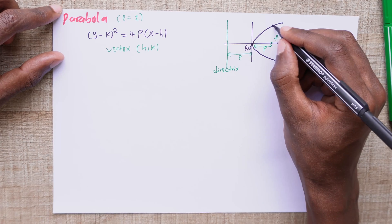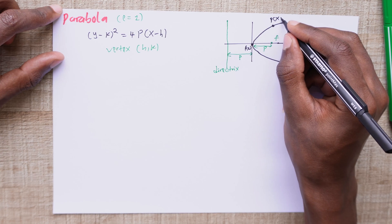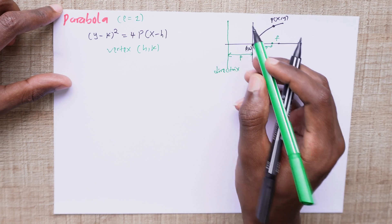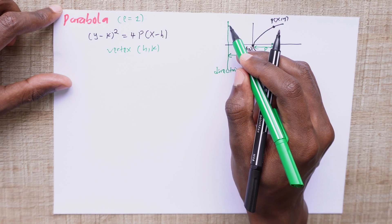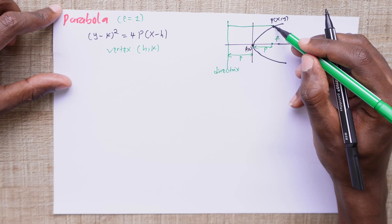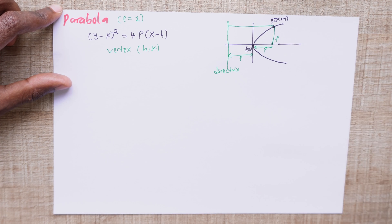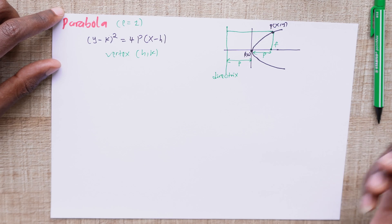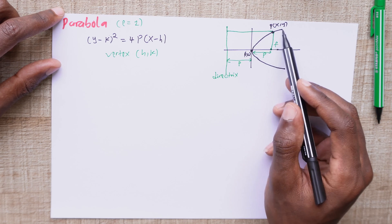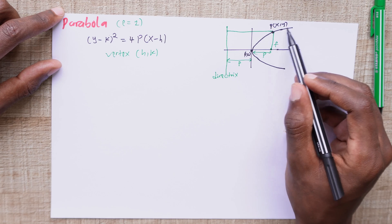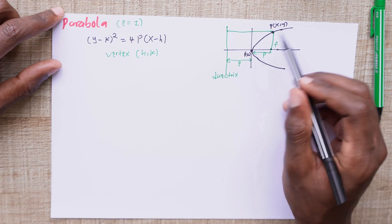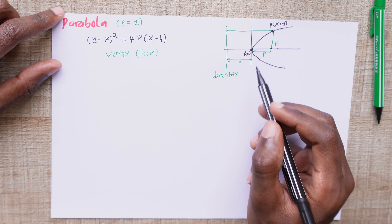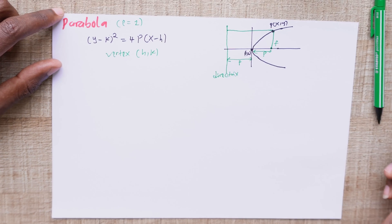The parameter p is the distance from the vertex to the focus — here there is just one focus. It's also the distance from the vertex to an imaginary line that we call the directrix. So if you have any point on the surface of the parabola, the ratio of the distance from the directrix to the distance from the focus is 1. In other words, the point P, wherever it is on this curve, is always going to be at the same distance from the focus F and the directrix.